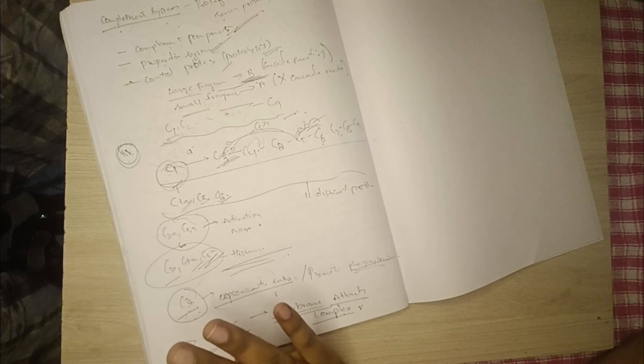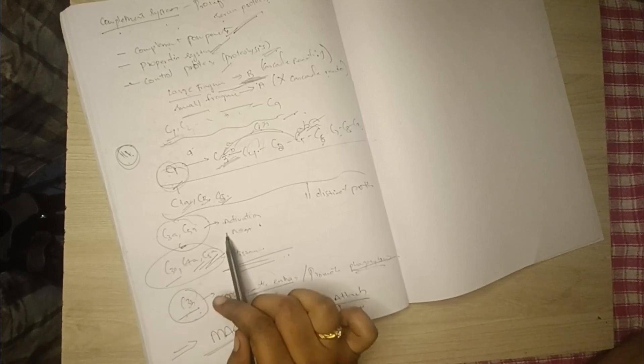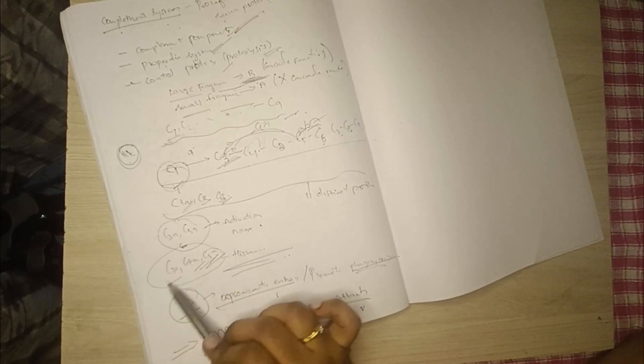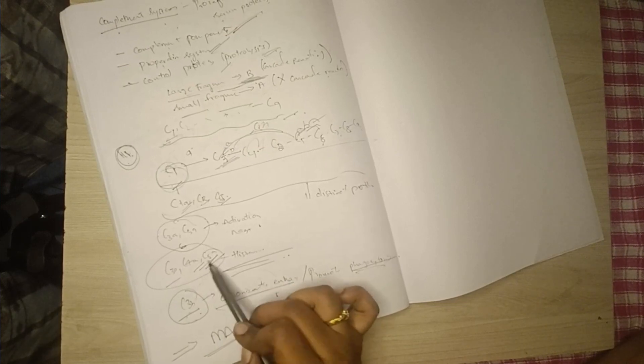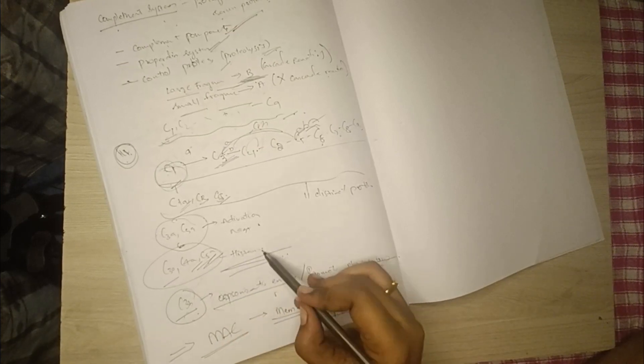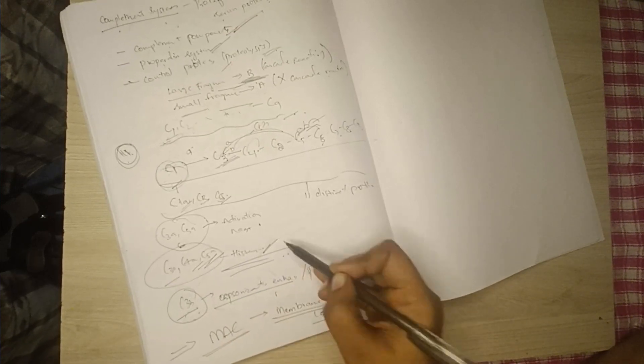C3a, C4a, and C5a help in the degranulation of mast cells and the release of histamine. Histamine in turn causes vasodilation and increases vascular permeability.